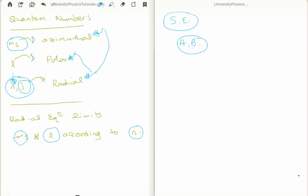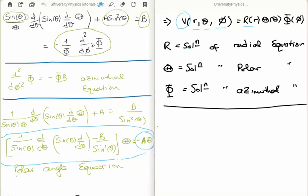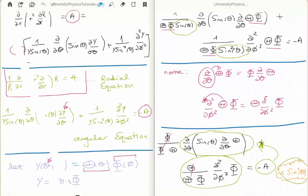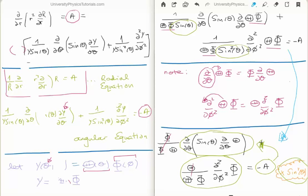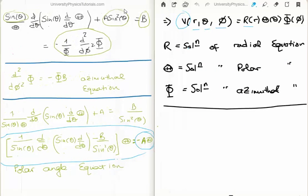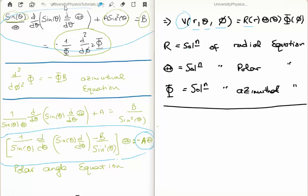That was pretty quick — I hope it was straightforward. Regarding the typo: going from the angular equation down, there should be a sinθ factor that I left out when multiplying across by sin²θ. Thanks for watching — please share it with your friends, subscribe to my channel, and leave a comment below.